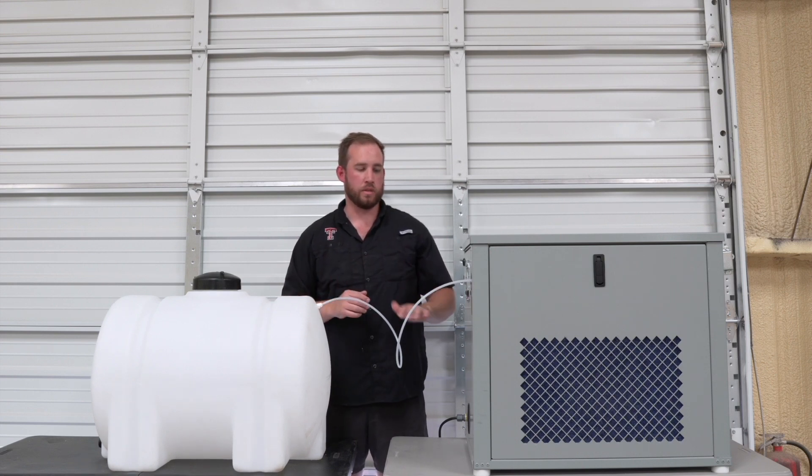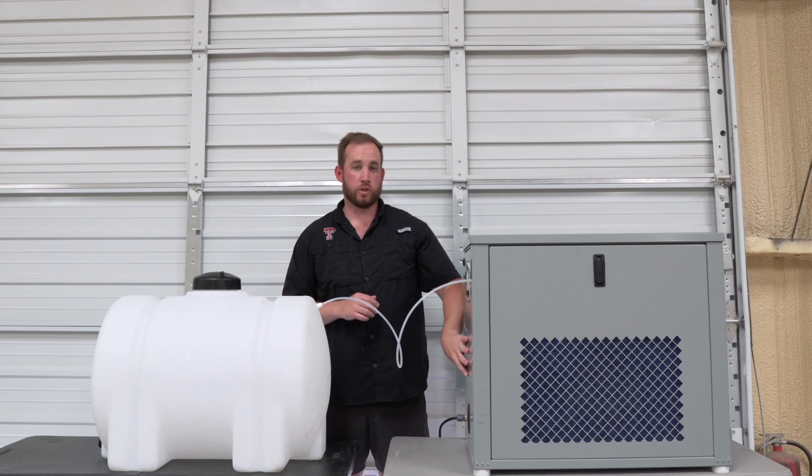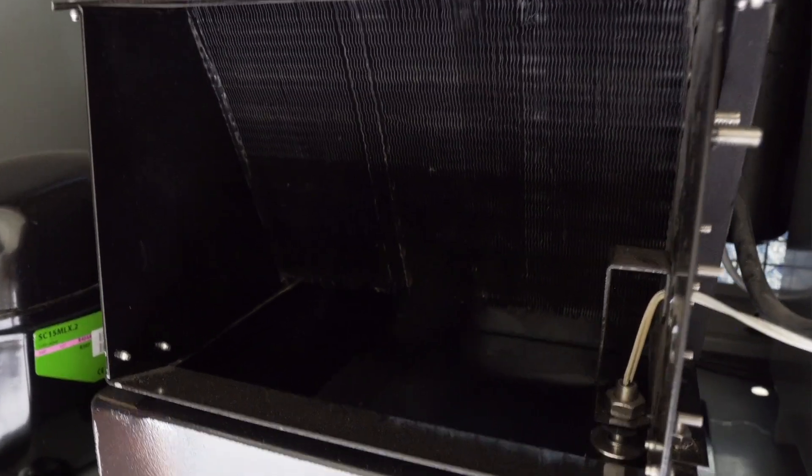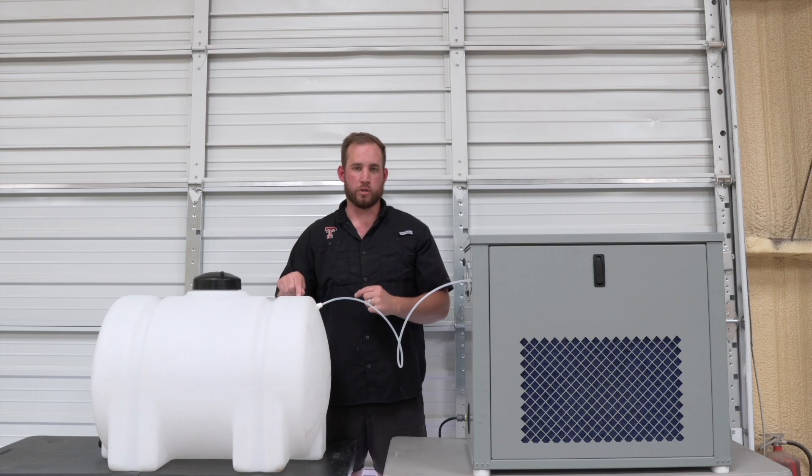So what's going to happen is when the machine internal tank gets full, there's going to be a float that gets tripped on the machine. When that float trips, what that signals is for the pump inside the machine to start dispensing water to this tank.